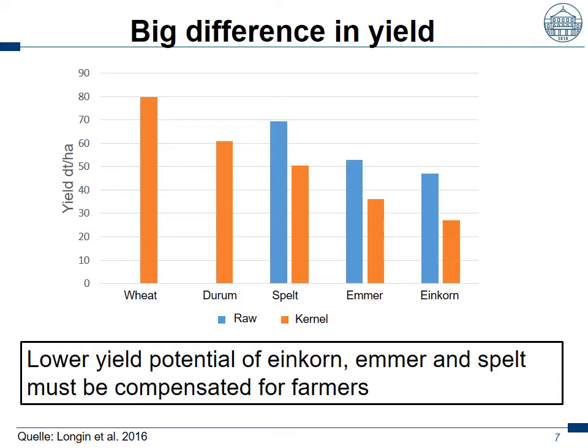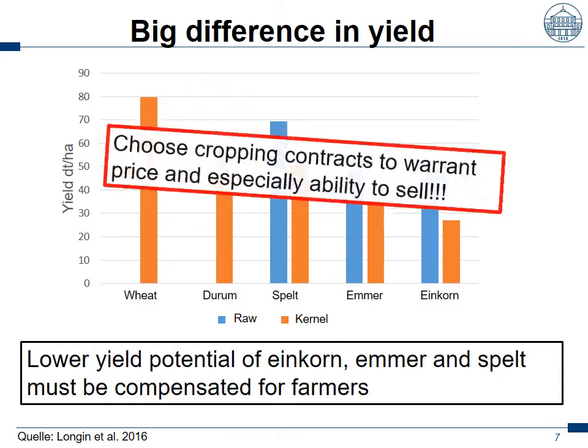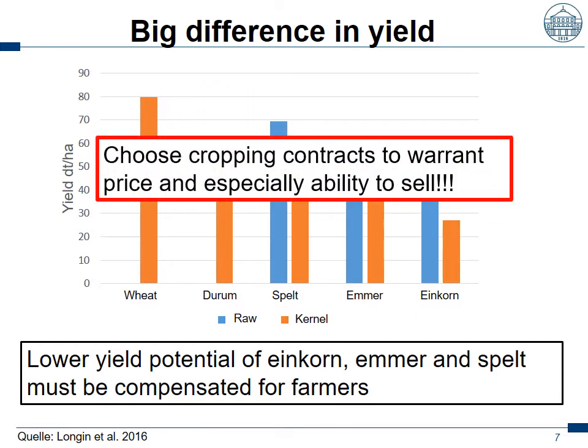For farmers, I really highly recommend that you grow spelt, emmer, or einkorn only when you have a contract with a mill which warrants your price and which warrants the takeover of the goods at harvest.